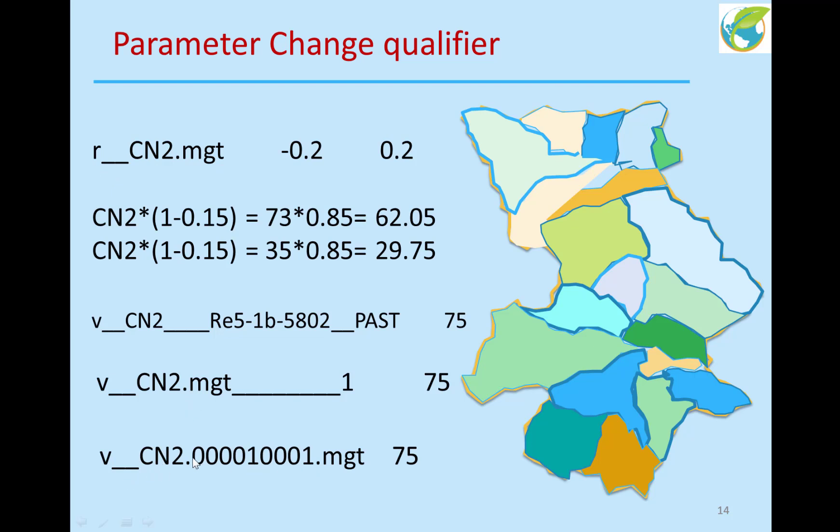Or, another option is, you give the name of your management file. So, exactly in that management file, whatever soil land use, whatever it has, instead of putting all the other qualifiers, you can give the name of that file. So, the SWOT edit program goes to specifically this file and changes the value of CN2 to that number.